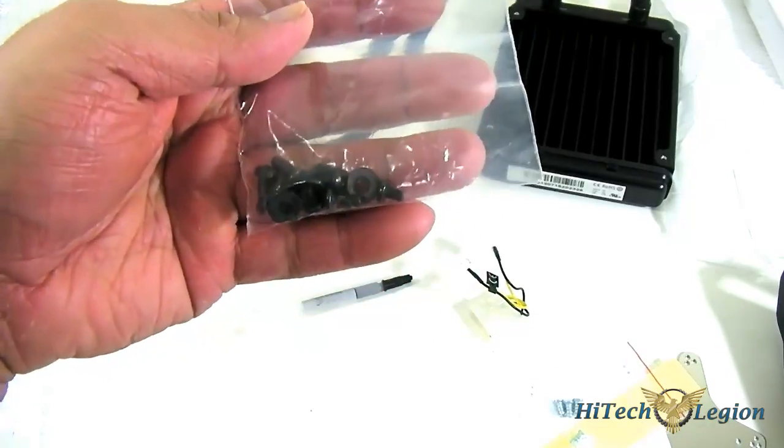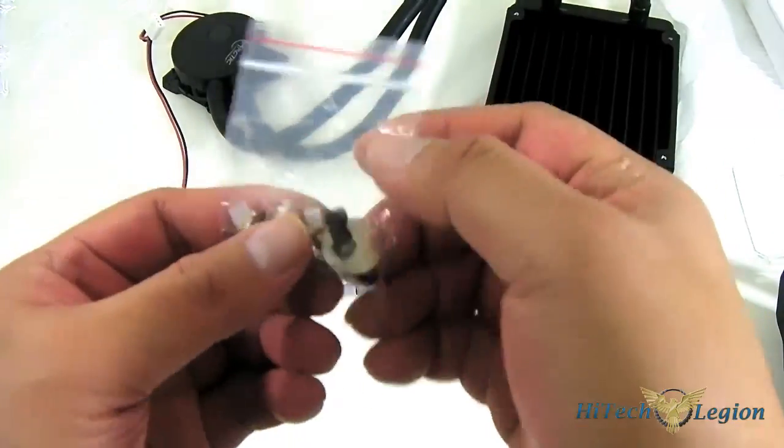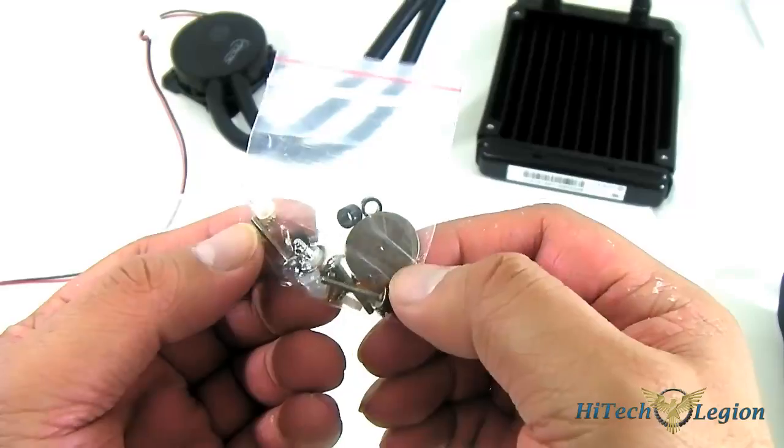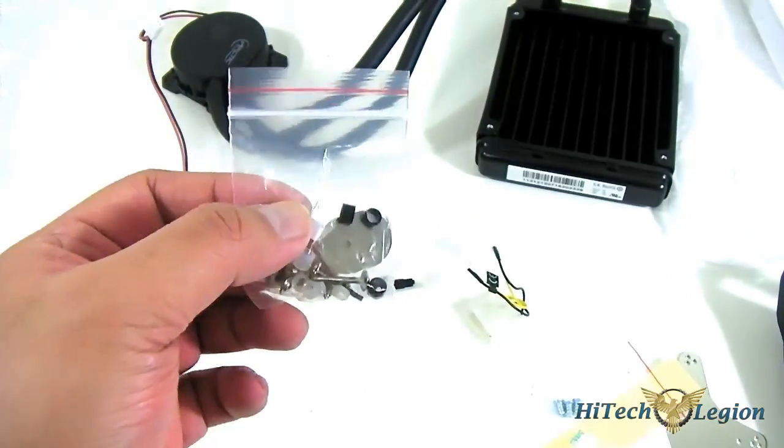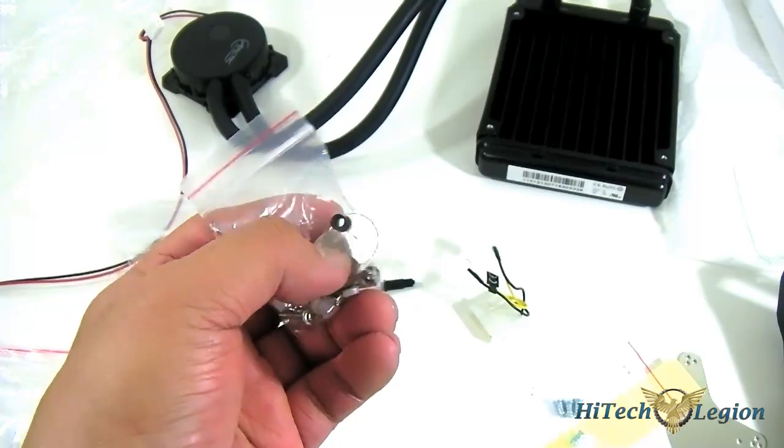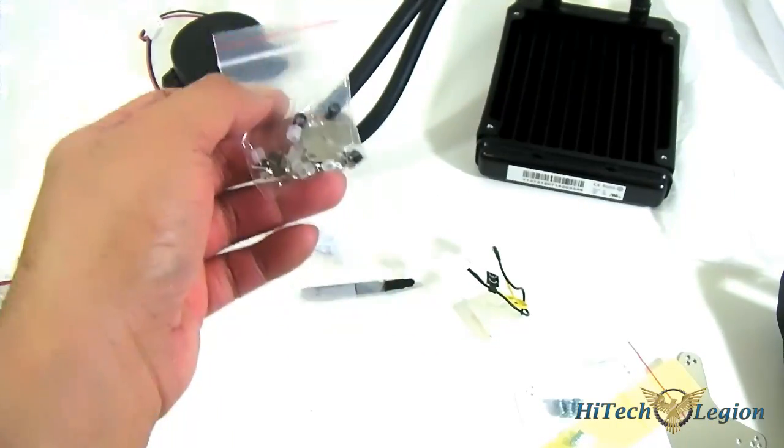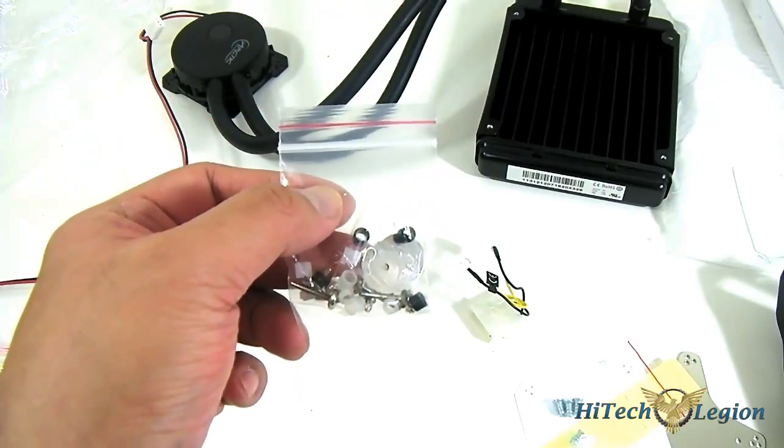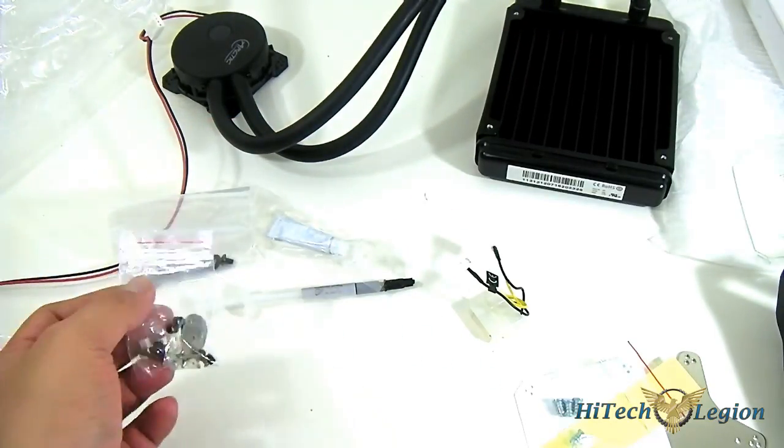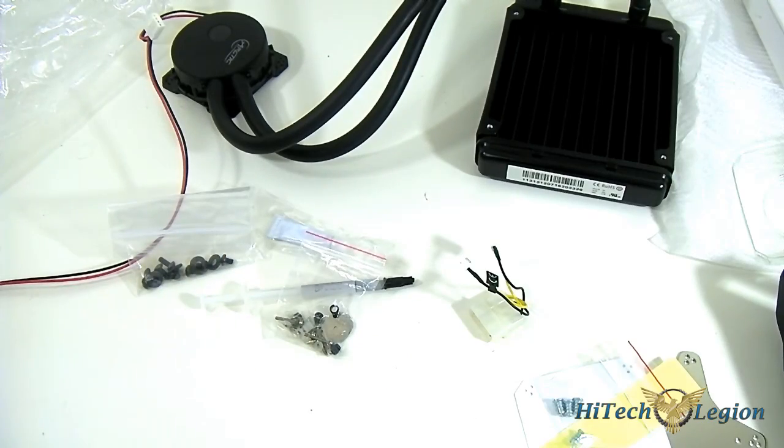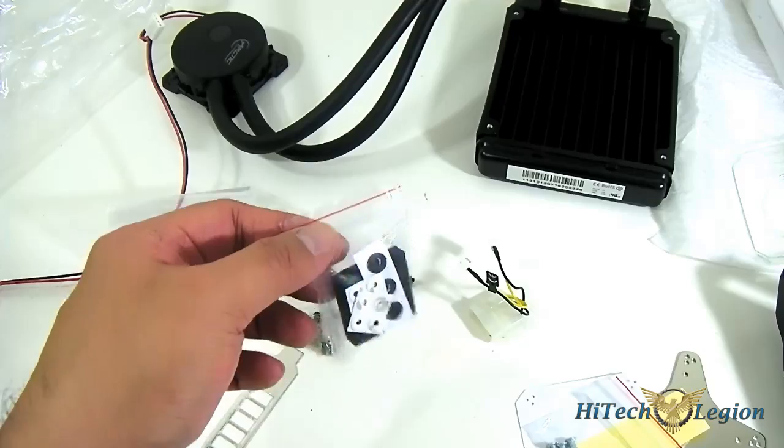These are more screws, some washers for installing, and longer screws here. There's two plates - these are for managing your cables later on, rather the tubes, so that you can attach it to the shroud unit without it dangling in the way.